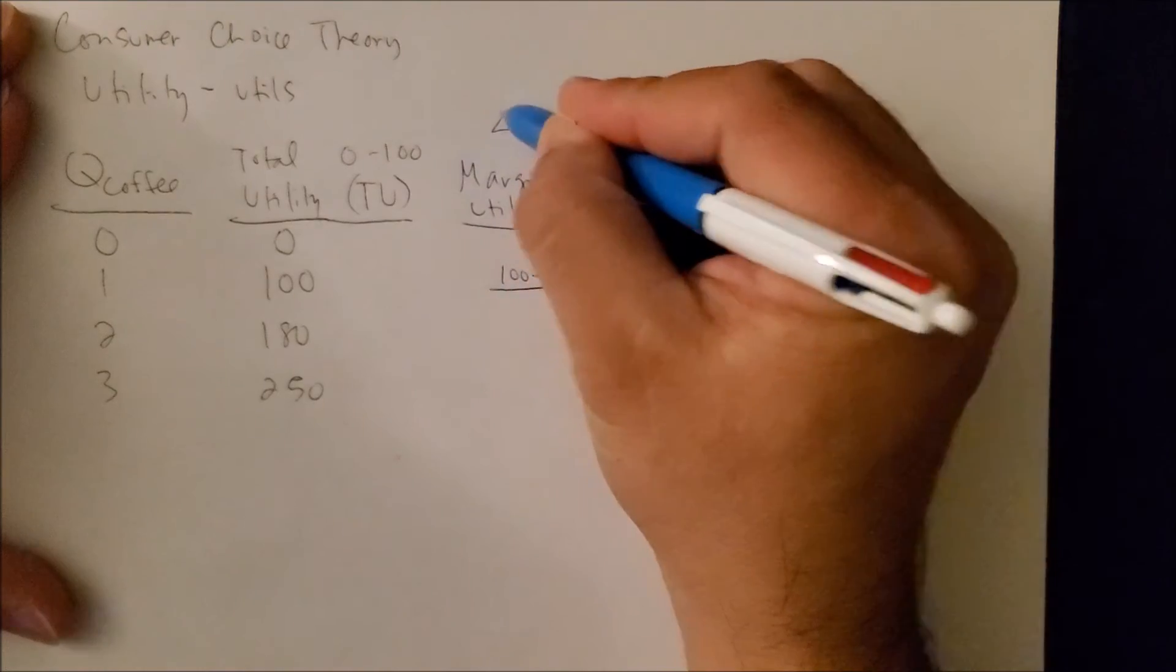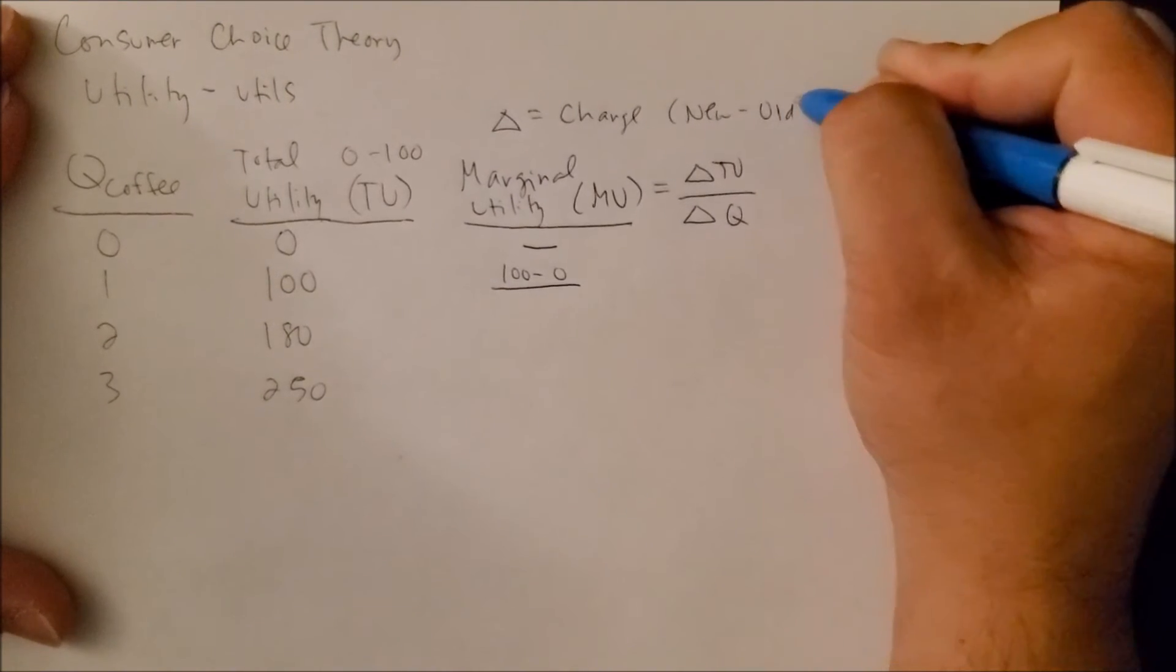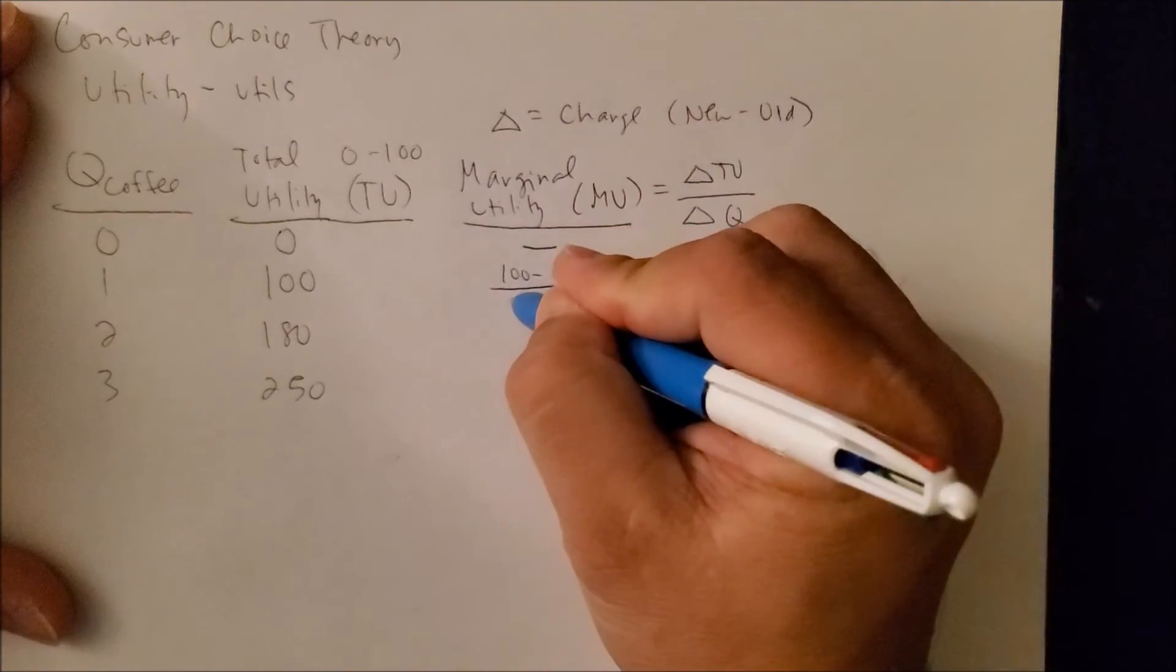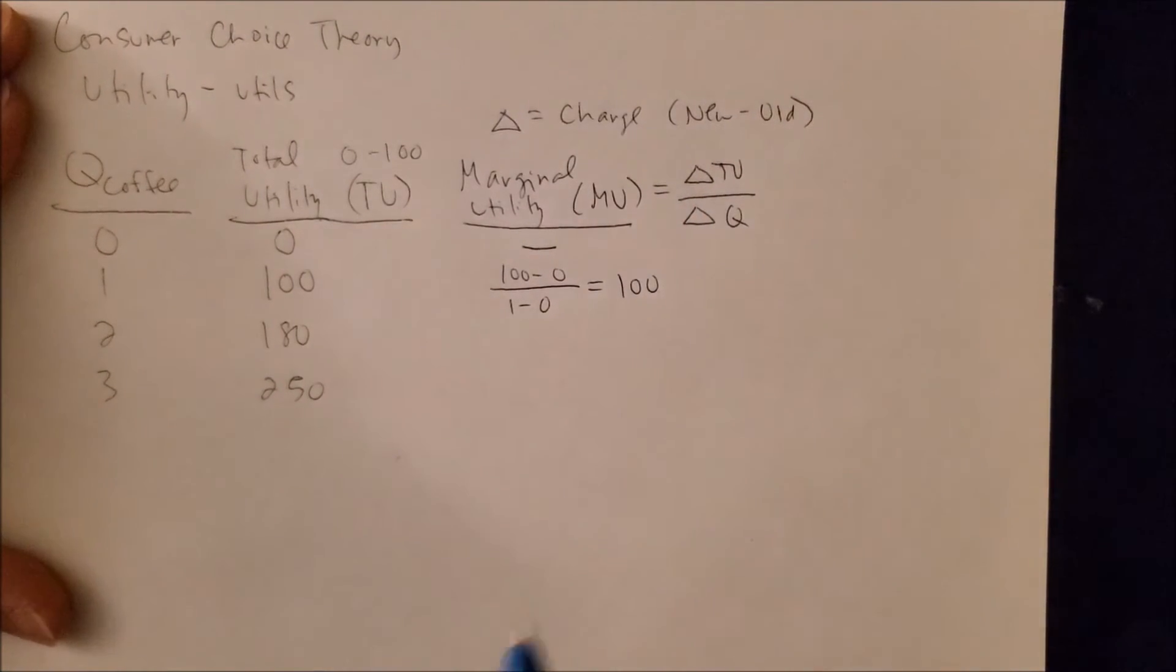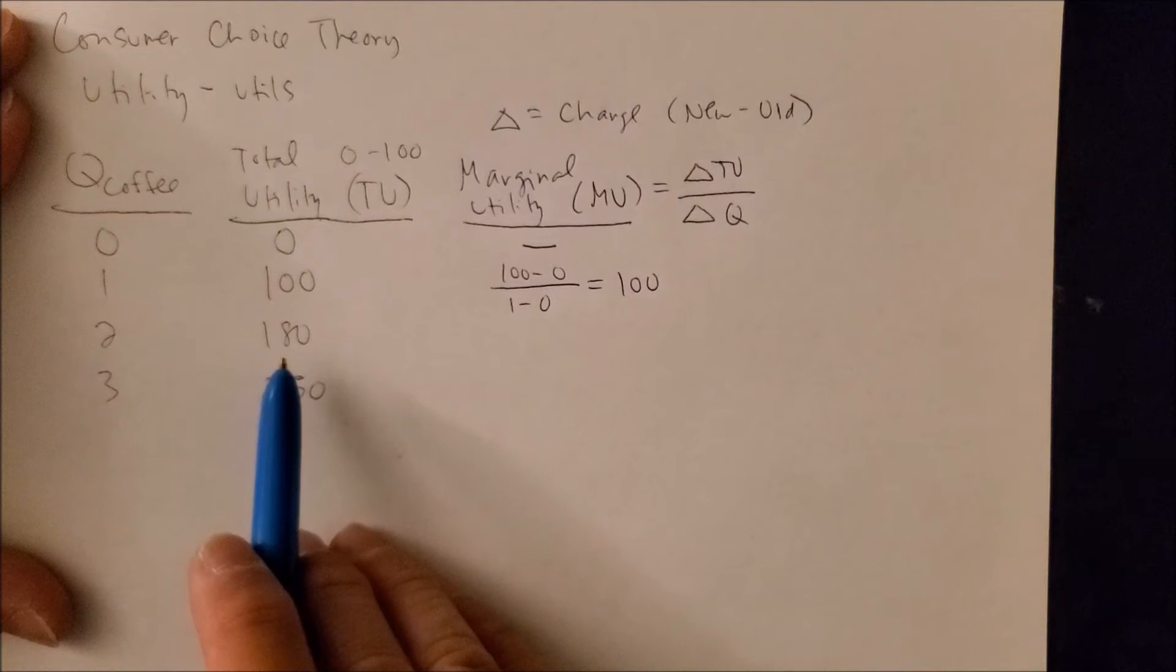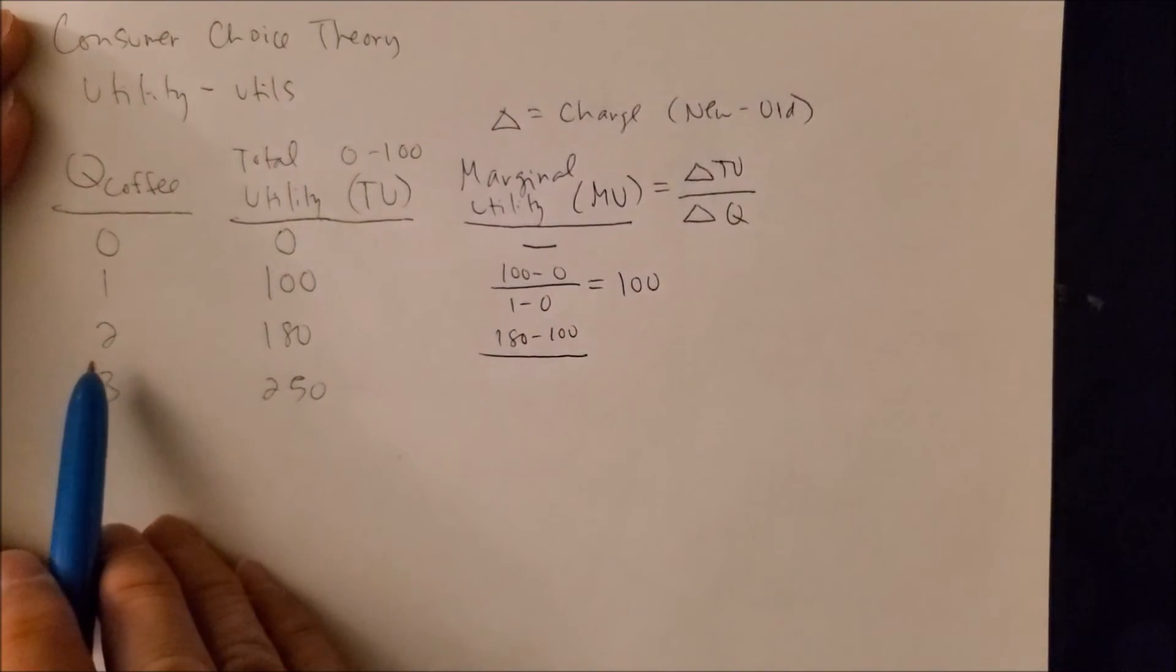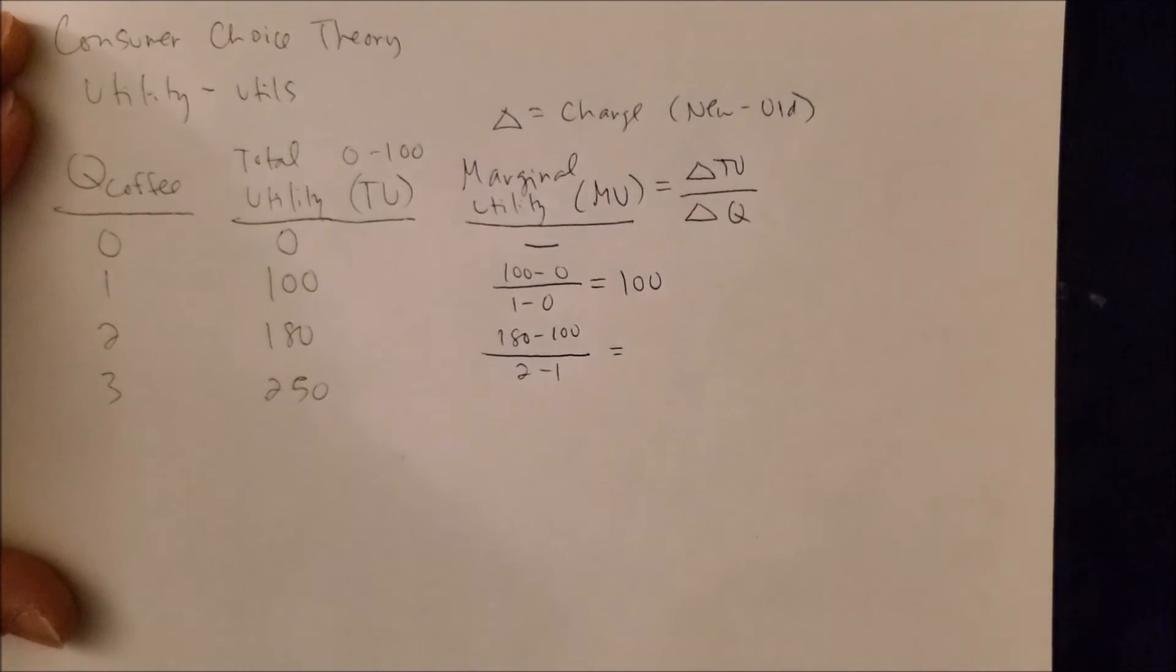Now we have delta Q here. We have one, that's the new quantity, minus zero. One minus zero, so the MU gives us 100. When we look at one to two cups of coffee, there's also a change taking place, but now it looks to be 180 minus 100 on the numerator over 2 minus 1, which is a change in quantity on the denominator, and this gives us 80.